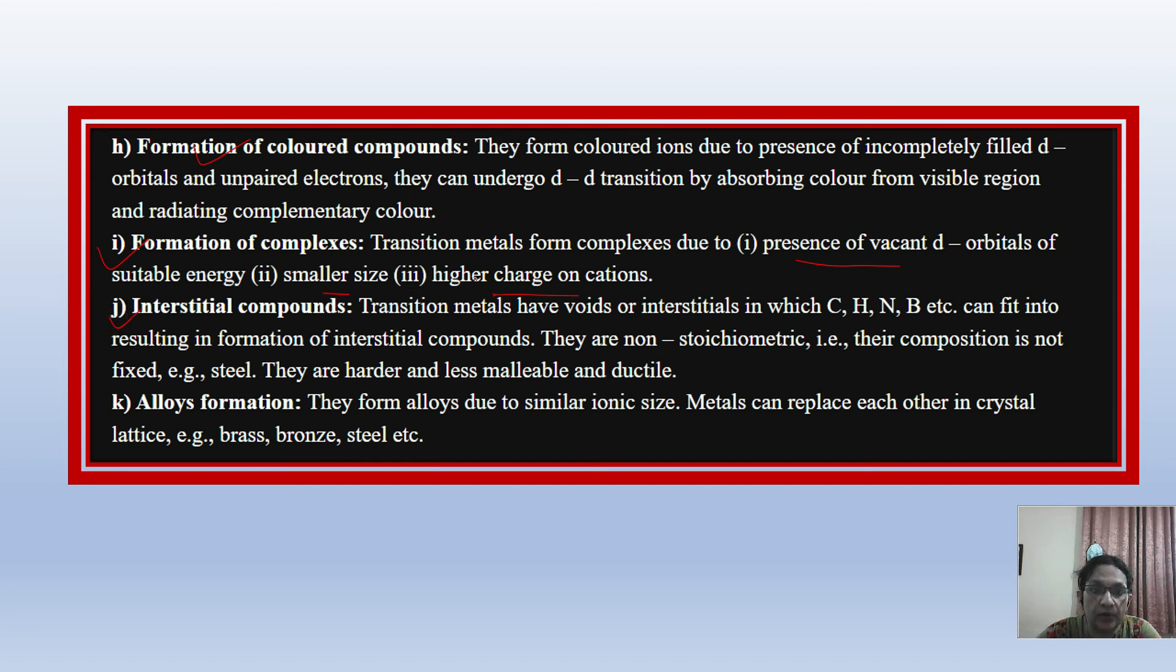Next point is interstitial compounds. Transition metals have voids and empty spaces where small atoms like carbon, hydrogen, nitrogen, and boron can fit. When these small atoms fit, interstitial compounds form. These compounds, like steel, are harder and less malleable and ductile. Alloy formation: transition elements participate in alloy formation. You can see brass, bronze, and steel—all contain transition elements.